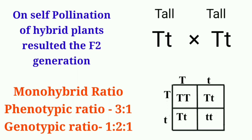The monohybrid phenotypic ratio is 3:1. However, if we find the genotypic ratio, it is 1:2:1 — one part homozygous dominant (TT), two parts heterozygous tall (Tt), and one part homozygous recessive (tt). So in a monohybrid cross, we get two types of ratios: the phenotypic ratio of 3:1 and the genotypic ratio of 1:2:1. This is how a monohybrid cross is done and the monohybrid ratio is determined.